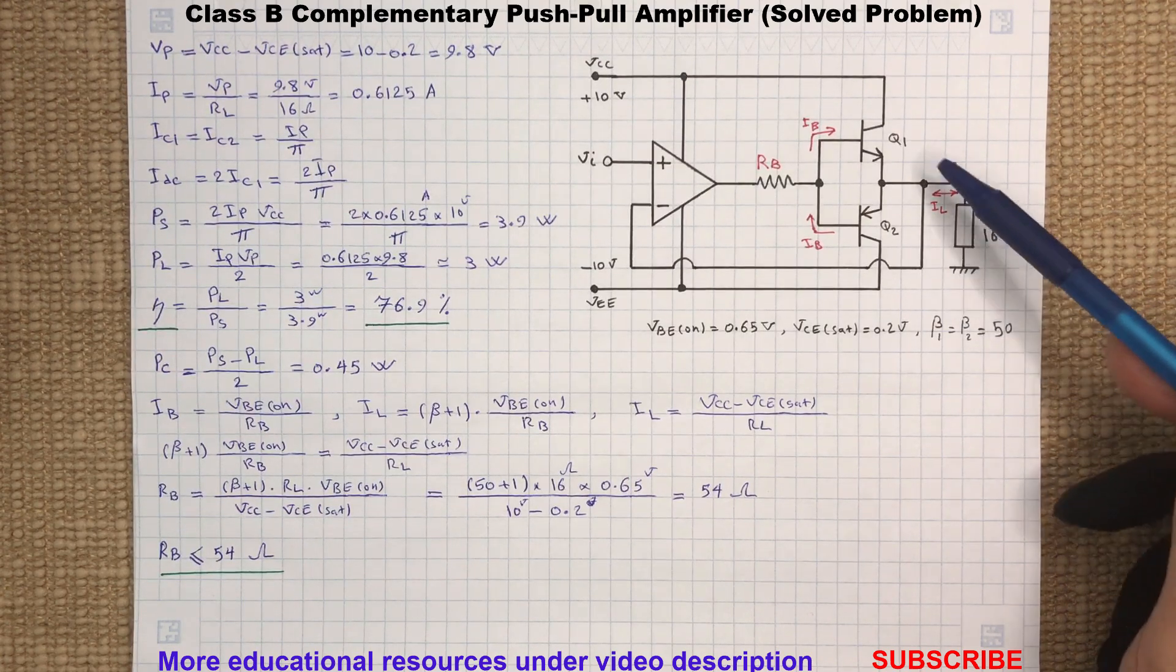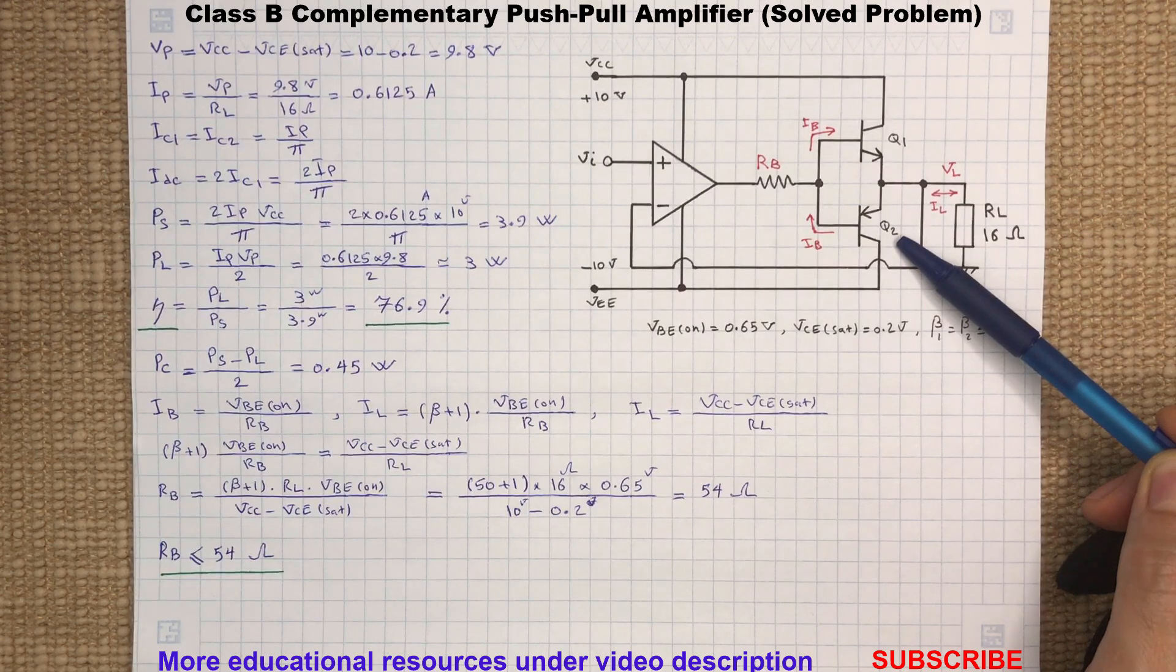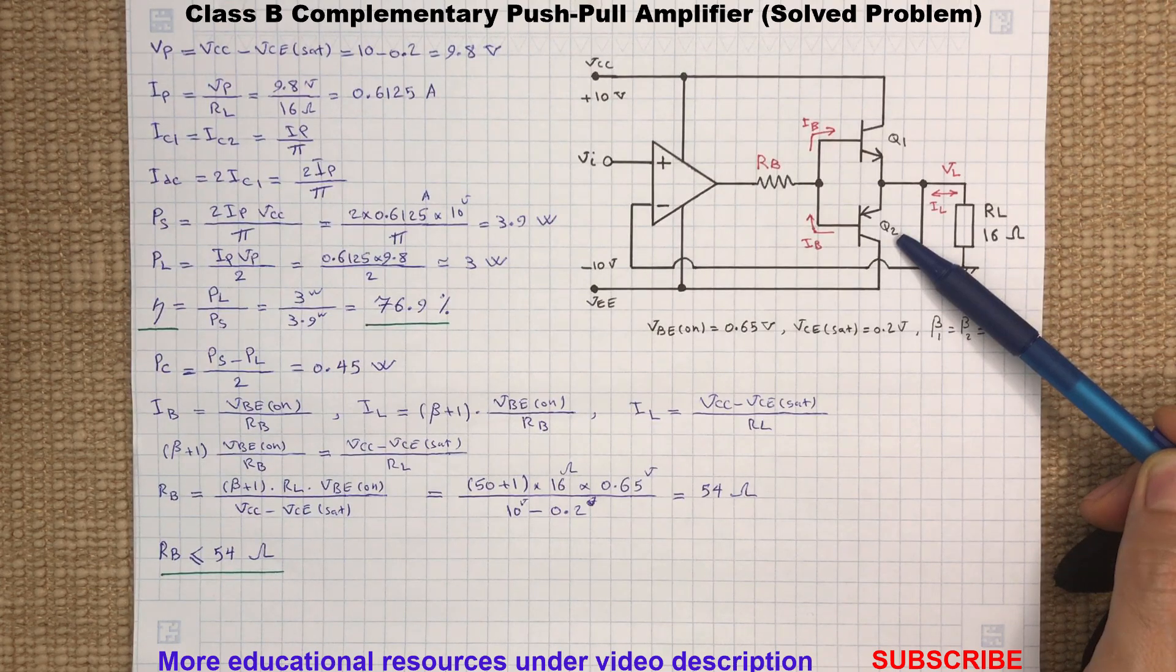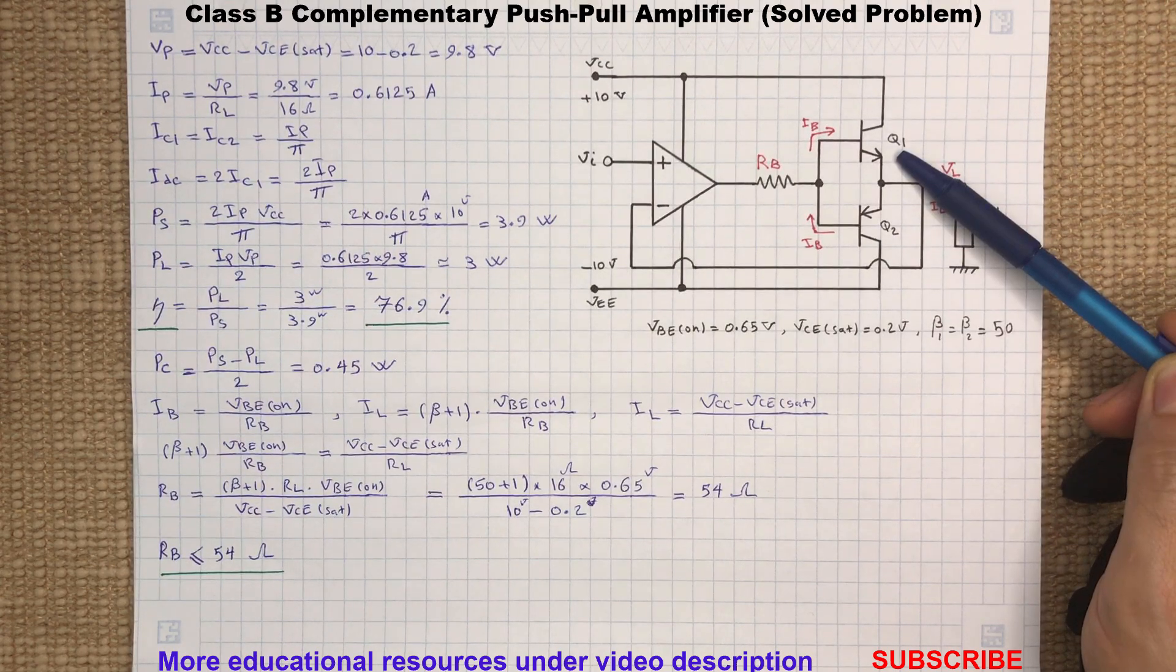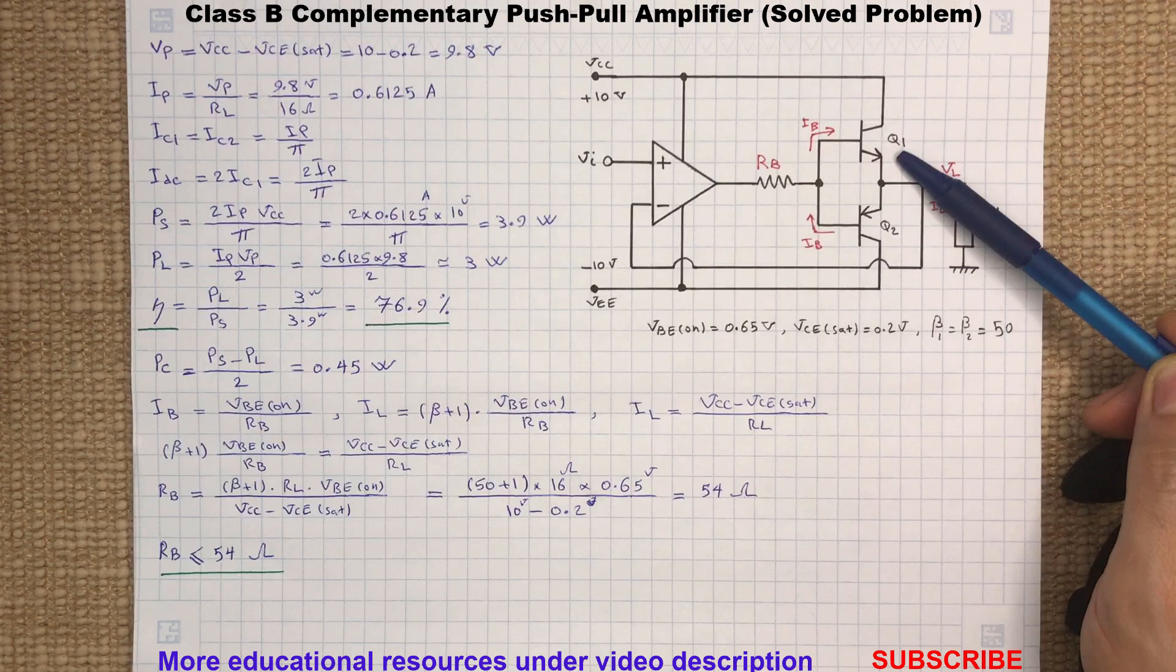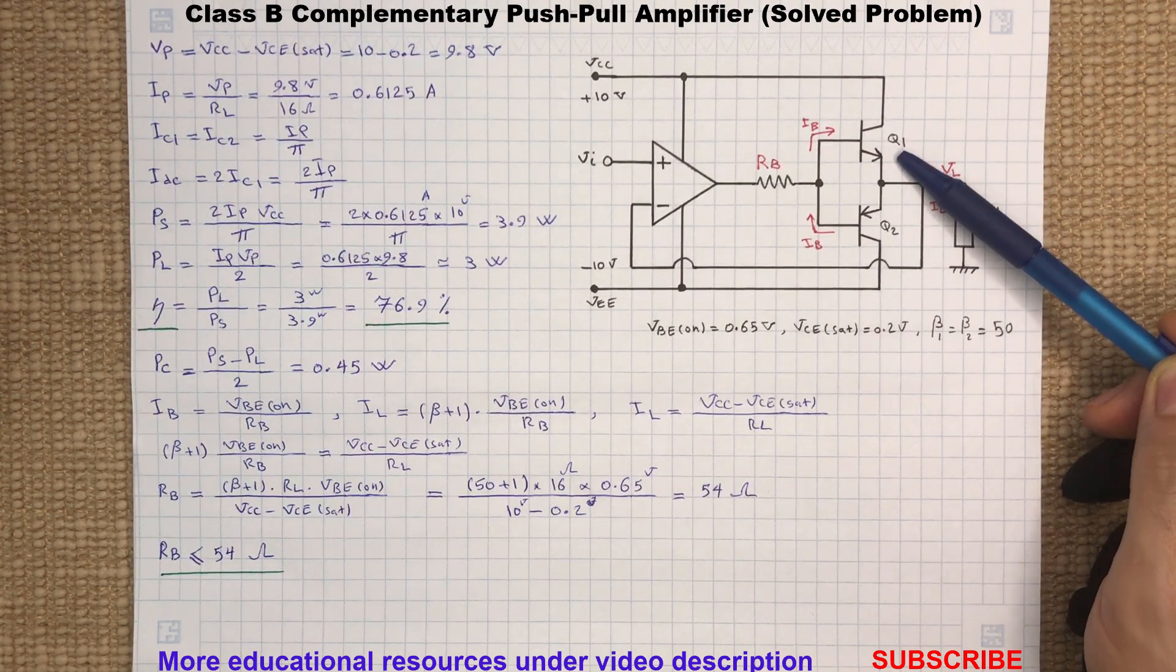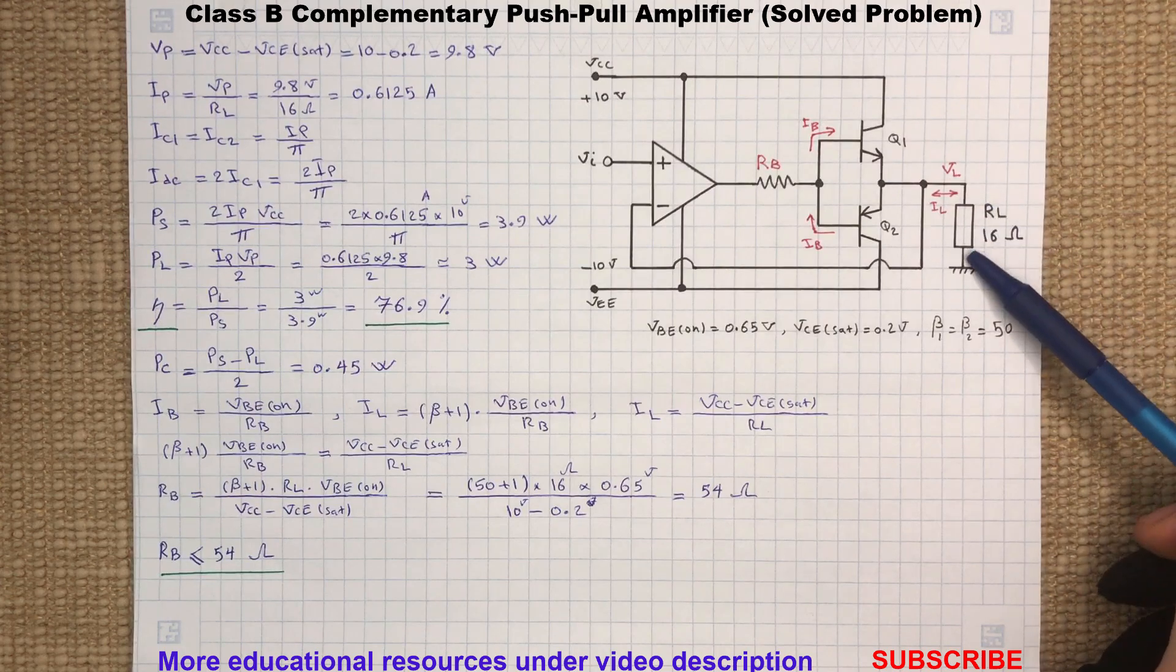For Vi greater than zero, transistor Q2, which is a PNP transistor, will remain off and Q1 operates as an emitter follower amplifier. It pushes the current from the emitter to the load.